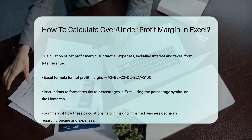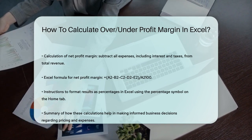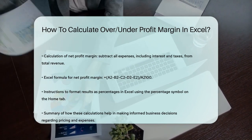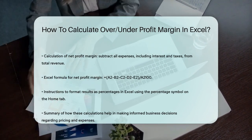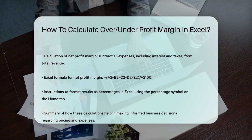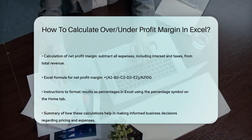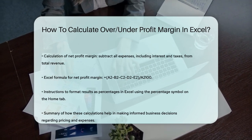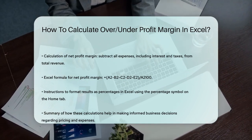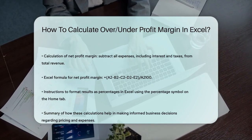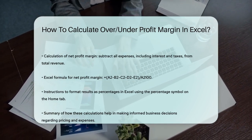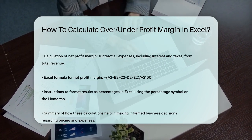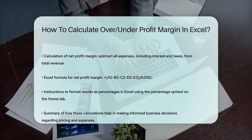To format these results as percentages in Excel, simply highlight the cells with your formulas and click the percentage symbol on the Home tab. By following these steps, you can easily calculate and understand your profit margins in Excel, giving you a clear picture of how profitable your business is. This information is crucial for making informed decisions about pricing, expenses, and overall business strategy.